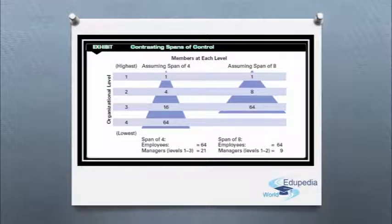Now as you can see here, an example can explain this. Assume that we have two organizations, both of which have 64 employees. As this exhibit shows, if one organization has a uniform span of 4 and the other a span of 8, the wider span will have one fewer level and approximately 12 fewer managers.